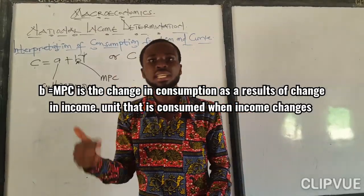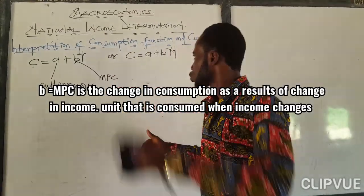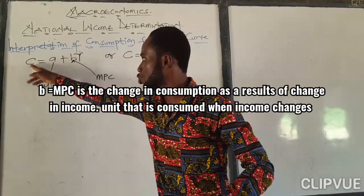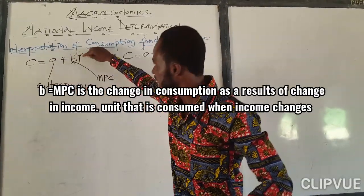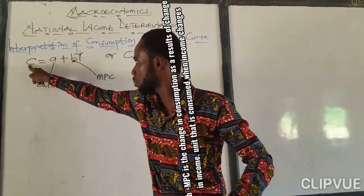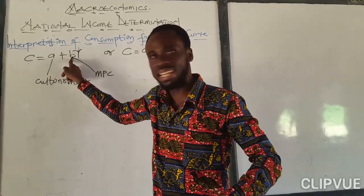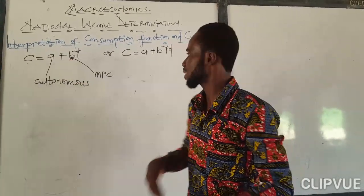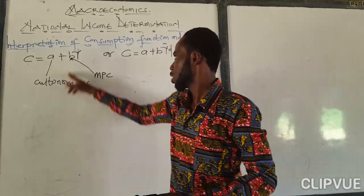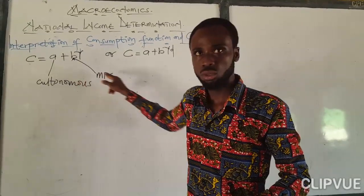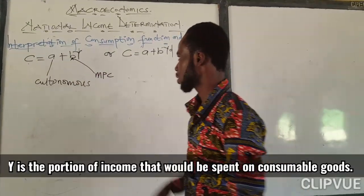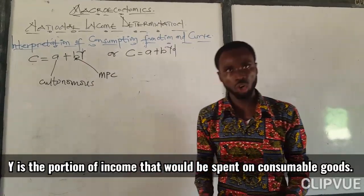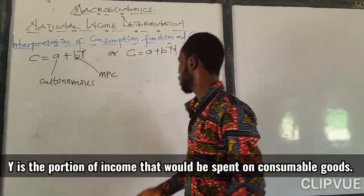The change could either be an increase or decrease. So we are saying that when income changes, consumption will change by B. In Mathematics we say that this is the slope, but in economics we call it Marginal Propensity to Consume. The Y as usual is the output or income.